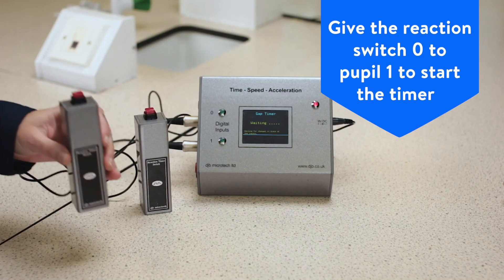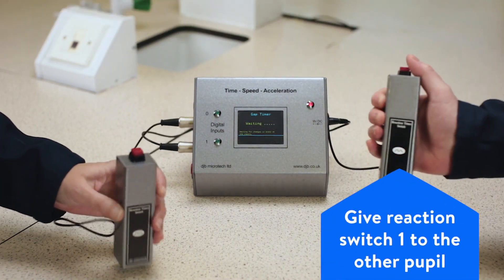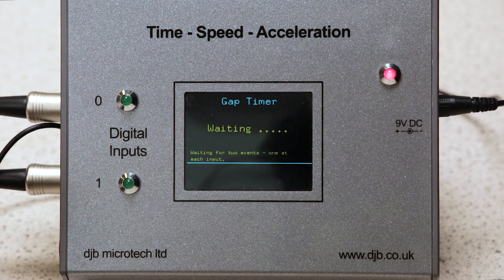Give the reaction switch connected to the 0 channel to one pupil—it will start the timer—and give the one connected to channel 1 to another pupil. Next, press go, and the screen will display waiting.